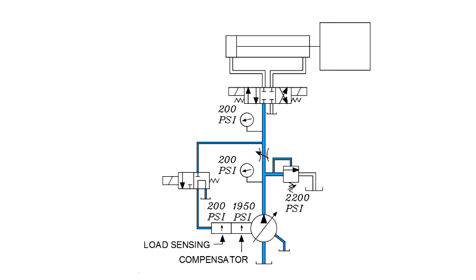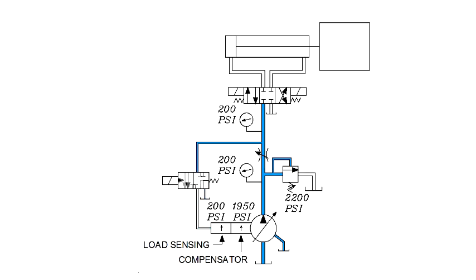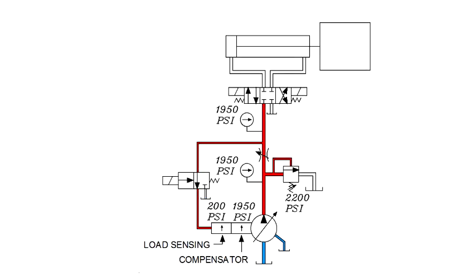When we are ready to move the load, the loading valve is energized. This directs a pilot signal from downstream of the flow control to augment the setting of the load sensing valve. Since the system is deadheaded by the directional valve, the pressure will build to the compensator setting, 1950 psi.